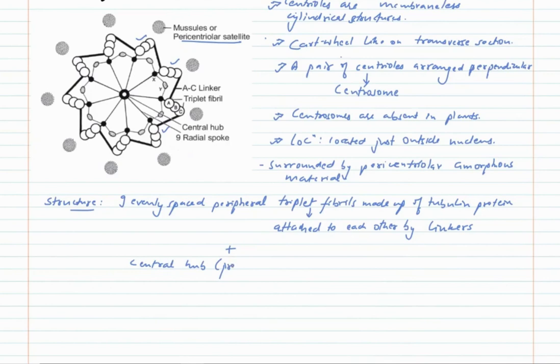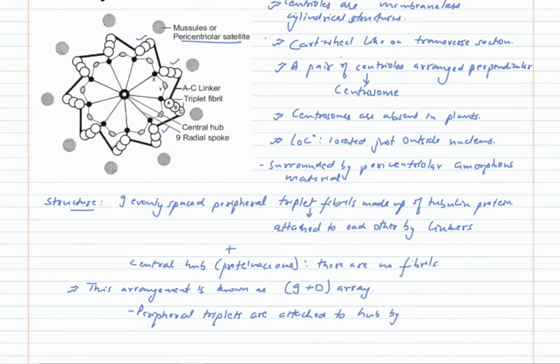The hub is made of protein, and there are no fibrils in the hub. This arrangement is known as a nine plus zero array, compared to cilia and flagella where the arrangement is nine plus two array because there are two fibrils in the center. The peripheral triplets are attached to the hub by radial spokes.